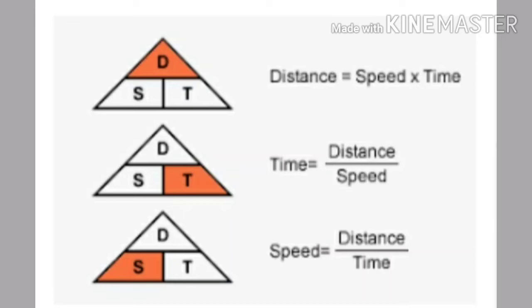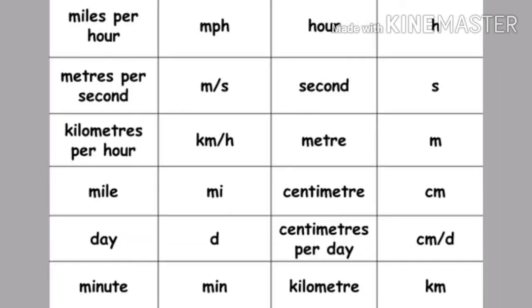The SI unit of speed is meter per second, and the CGS unit of speed is centimeter per second. Sometimes we measure distance in kilometers and time in hours, and then the unit of speed is kilometer per hour.